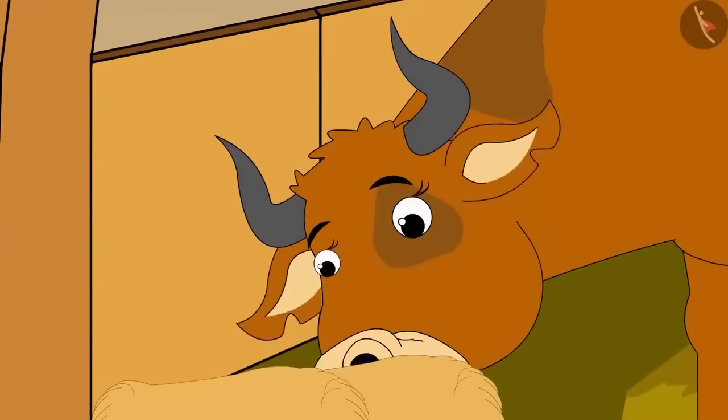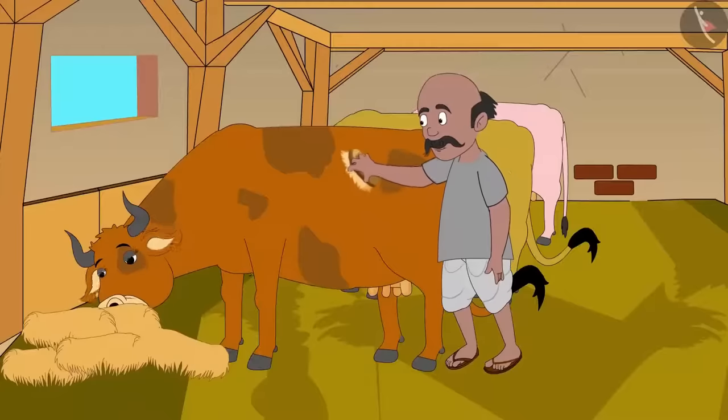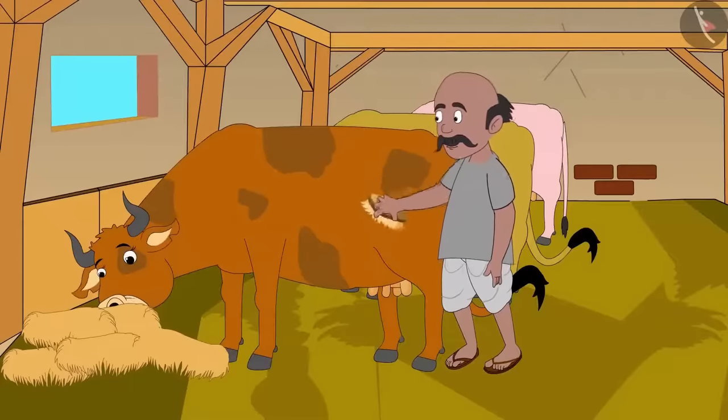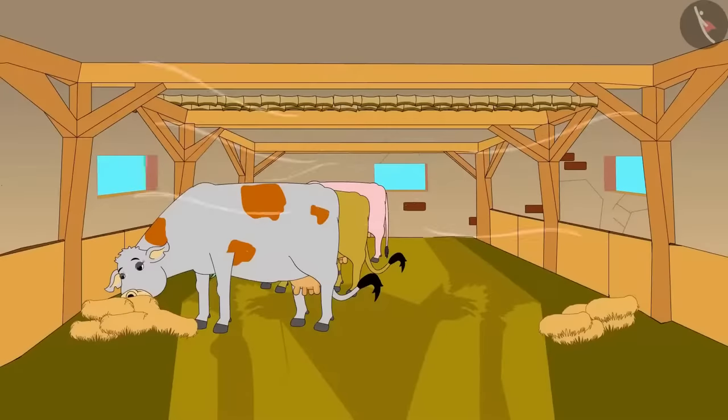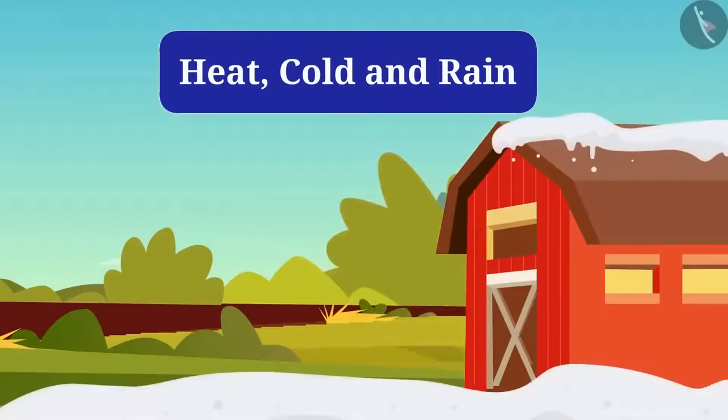The animals are regularly brushed to remove dirt and loose hair from the body. And the animals are provided with ventilated roofing, which also protects them from heat, cold and rain.